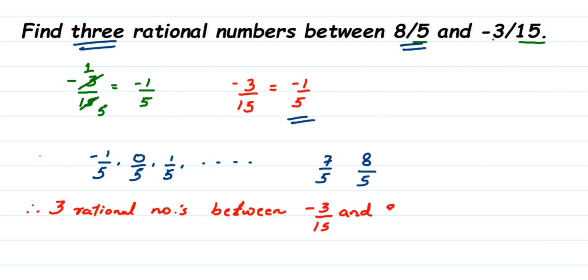I'm going to start from 0/5, or you can just write down 0 instead of 0/5—both are the same. So 0/5, and I'll take 2/5, I'm just taking randomly here, and the last one will be 7/5.